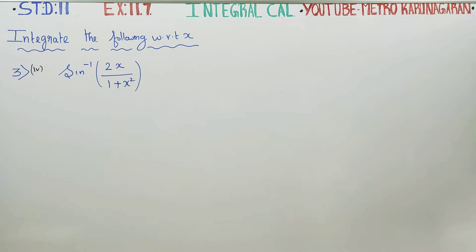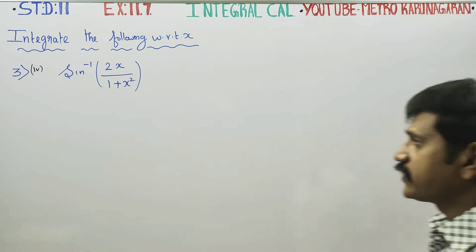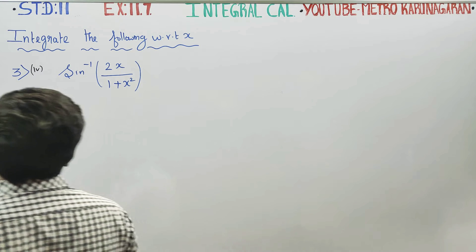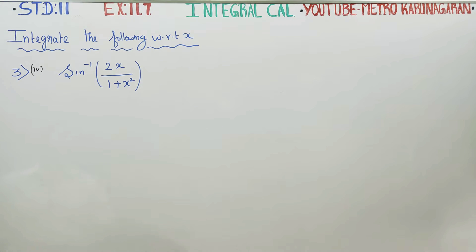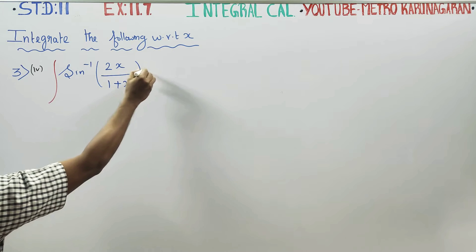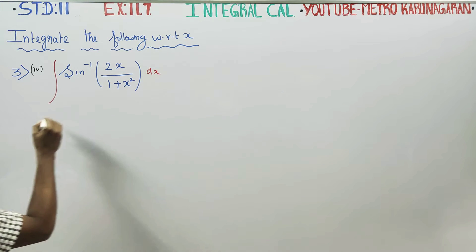Dear 11th standard students, in exercise number 11.7, they are asking you to integrate sin inverse of 2x by 1 plus x square with respect to x. This is the third sum, fourth subdivision, and you have to integrate with respect to x.